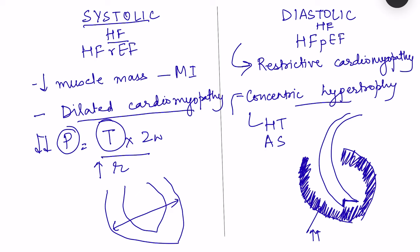Regarding left versus right ventricle: hypertension and aortic stenosis affect the left side of the heart, but any cause of pulmonary hypertension will affect the right side, since the right ventricle pumps against pulmonary vessel pressure, leading to concentric hypertrophy on the right. Similarly, a right-sided MI leads to right-sided failure. Depending on which side of the circulation is affected, we get left-sided or right-sided heart failure. Now let us examine the physiological basis of signs and symptoms in left and right sided heart failure.